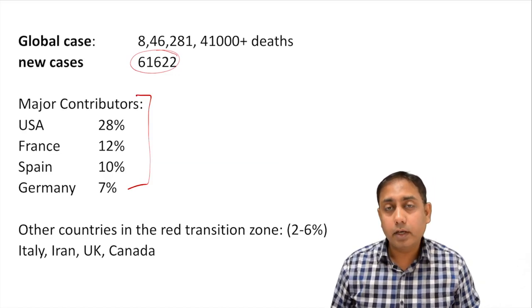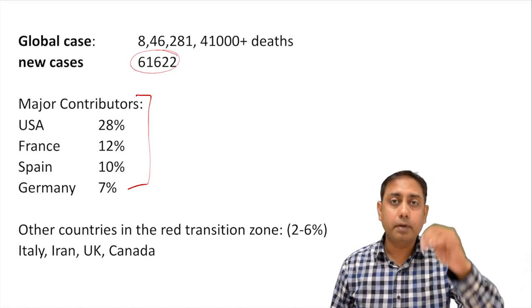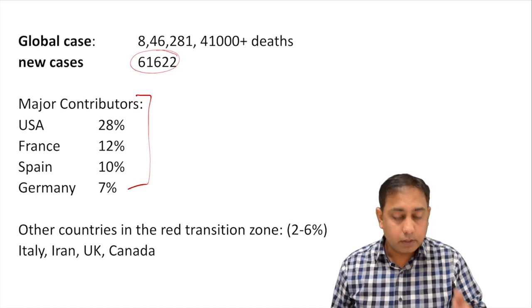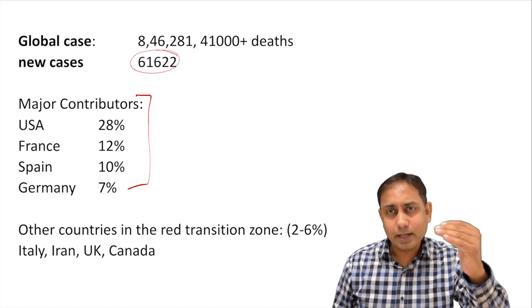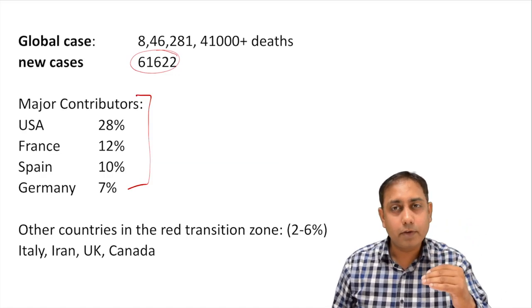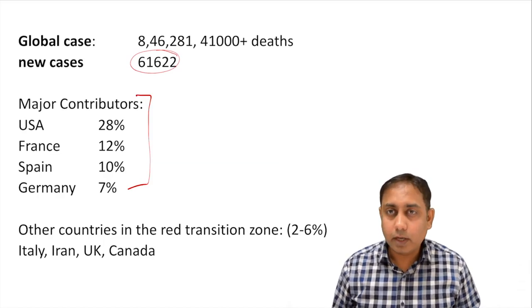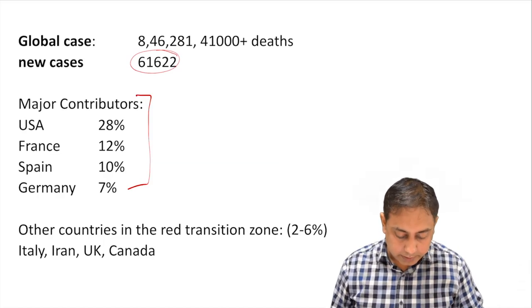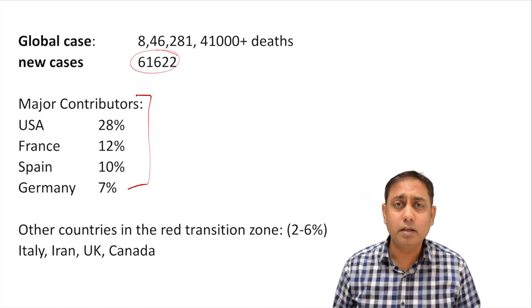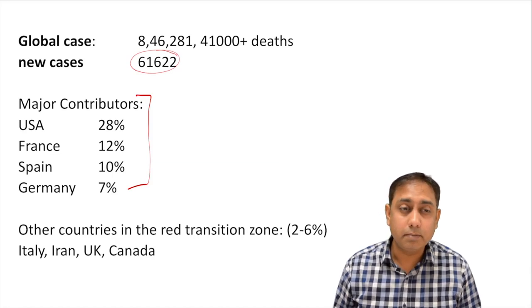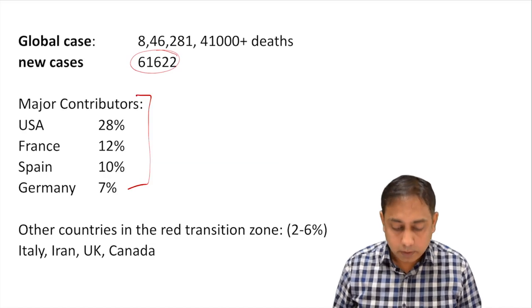Italy was among the top countries contributing to COVID cases across the globe, but on 31st of March we have seen that Italy has slightly come down. The disturbing factors are Spain and France, and the next countries which could be in trouble in terms of case reporting or mortalities would be from Asia, Africa, or the developing part of the world.